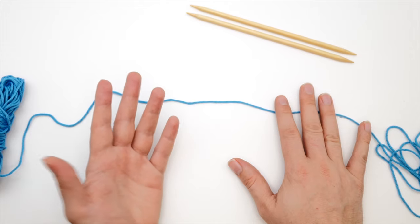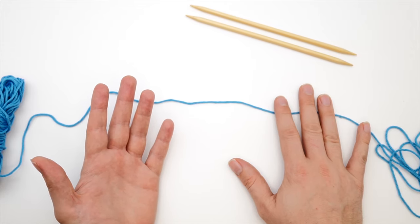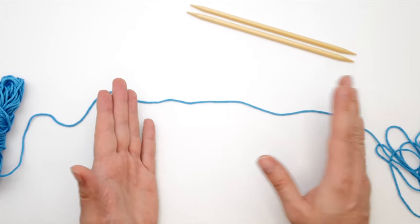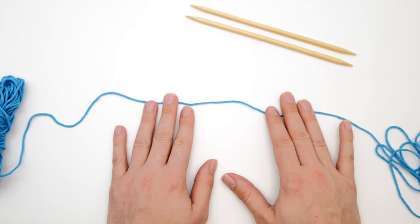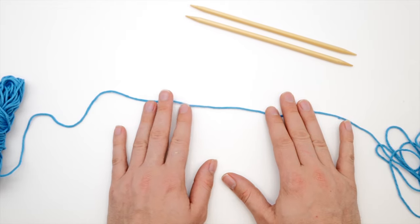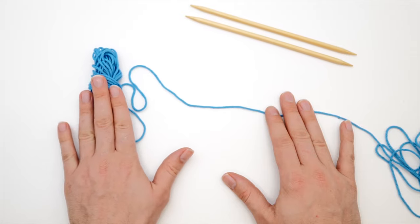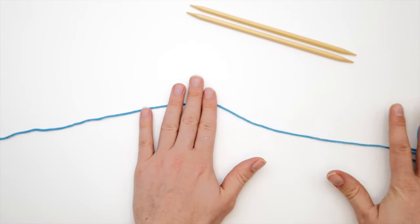There's a rule of thumb that says set aside three to four times as much yarn as your final work will be wide. So if you're knitting a scarf of say 10 inches then set aside 40 inches. The working yarn and the ball should be on your left and the tail on your right.